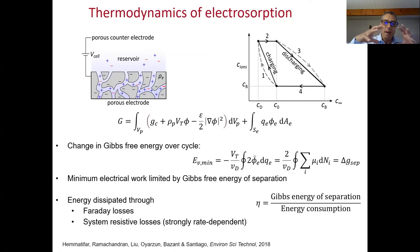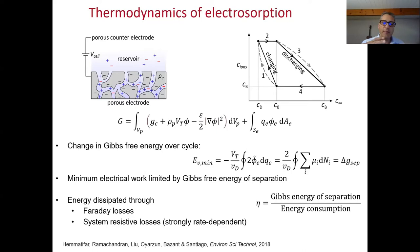We then consider a simple cycle between two reservoirs — one at high ion concentration and one at low ion concentration — and write equations for the cyclic amount of electrical input required. The most important finding is that the minimum electrical work required to attract ions, cram them into a small region, and then release ions and recover some work is equal to the Gibbs free energy of separation, related to the concentrations of the salt in the two output regions. You can only achieve this minimum if you have absolutely no dissipation. Sources of dissipation are Faradaic losses from electrode reactions and all resistive losses, which are very strongly rate-dependent.